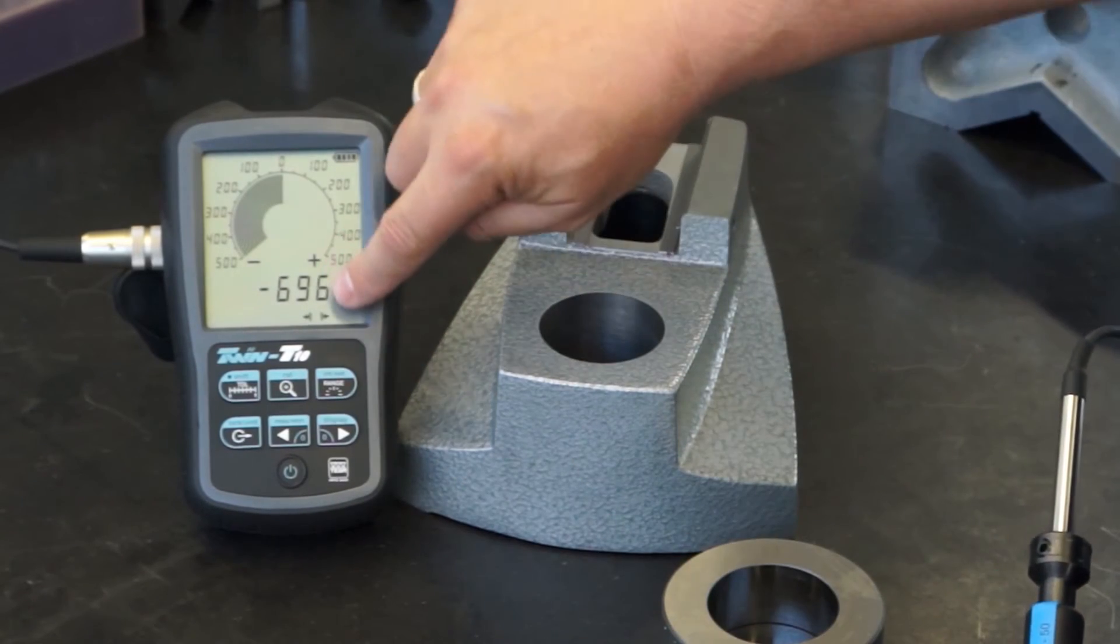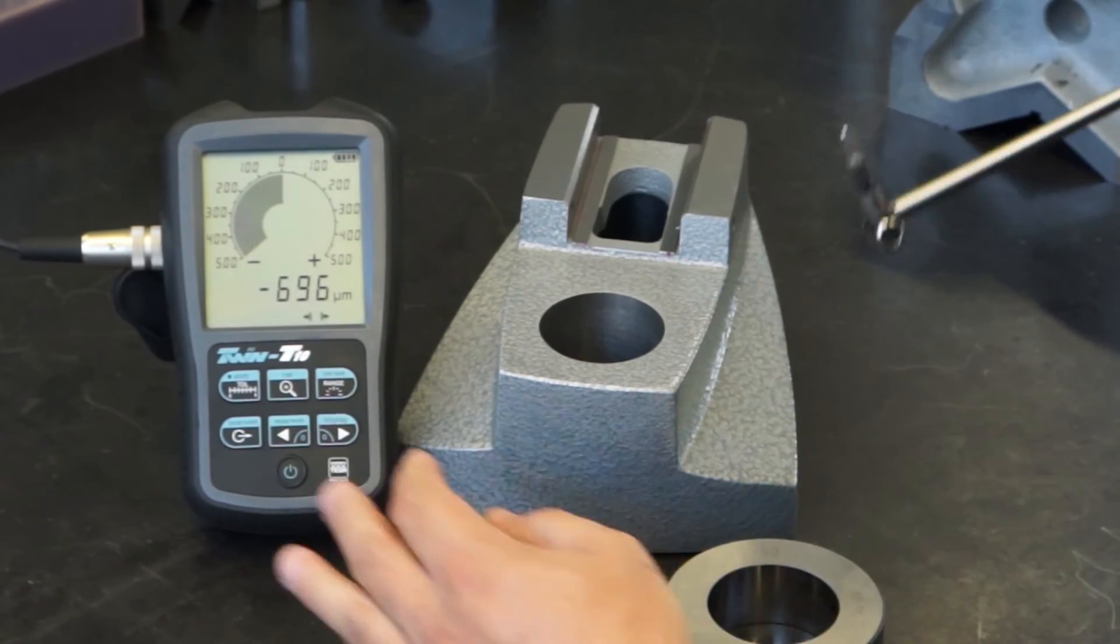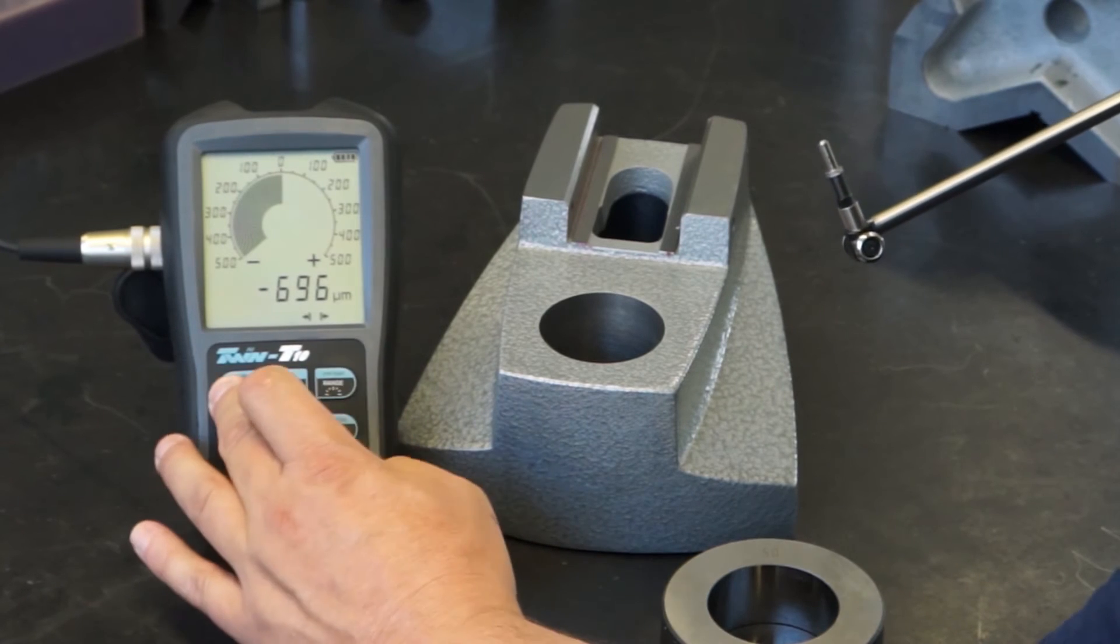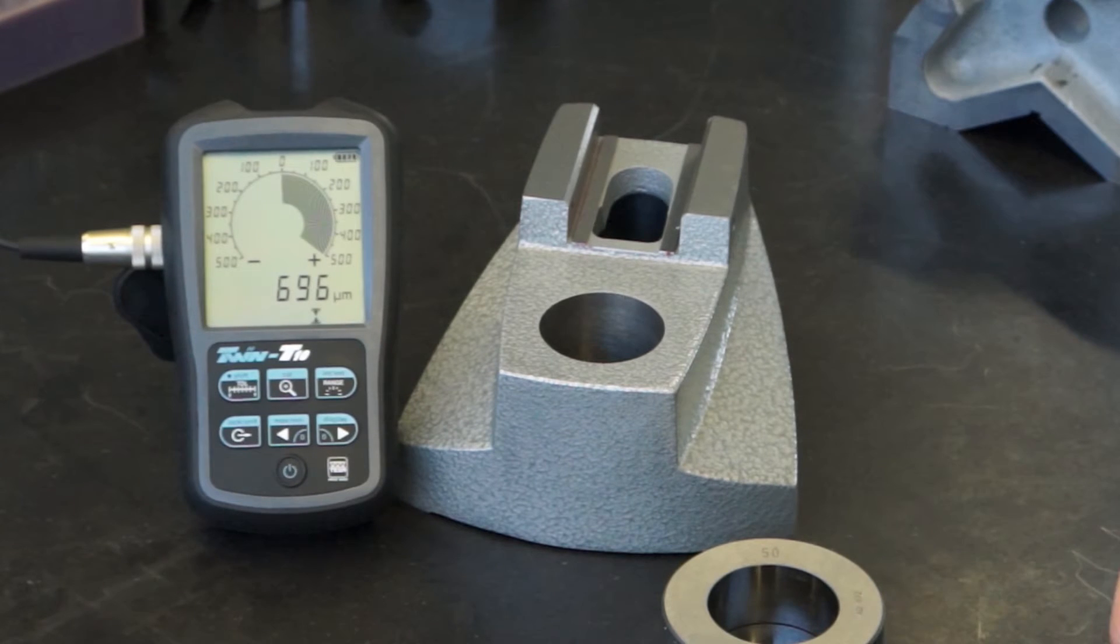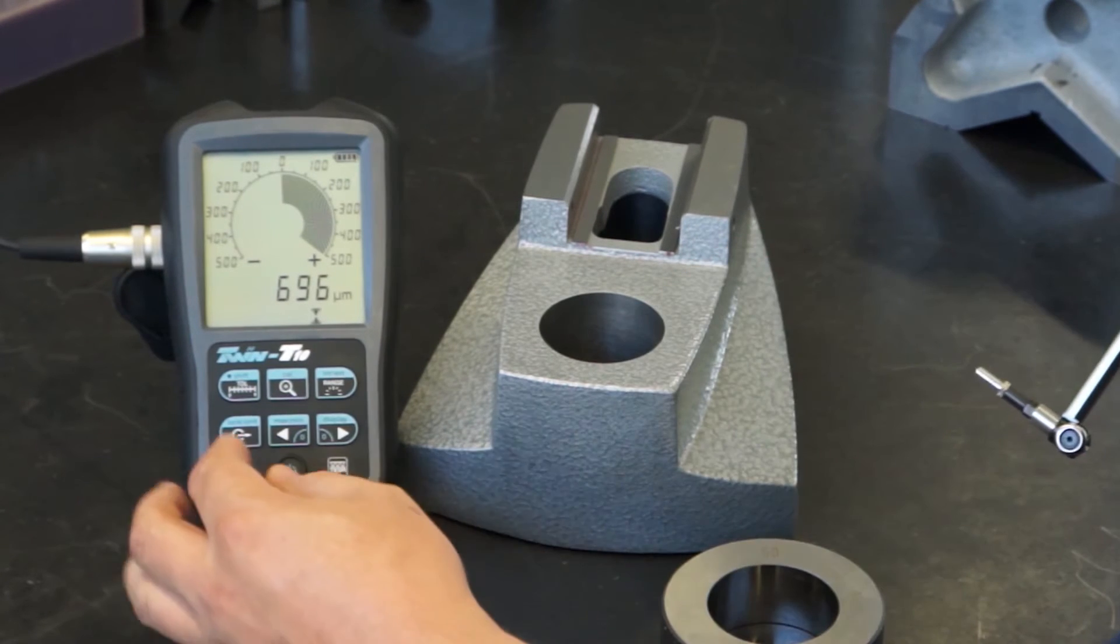The display shows that the TWIN T10 is currently in plus-A external measurement mode, and we need to change it to minus-A internal measurement mode. Press the shift and internal external keys until you see the display switched to minus-A measurement mode.